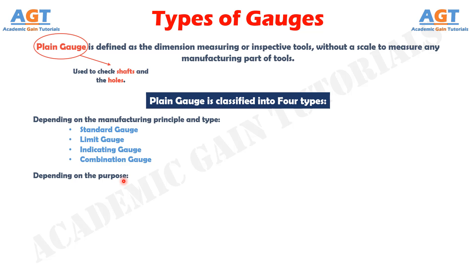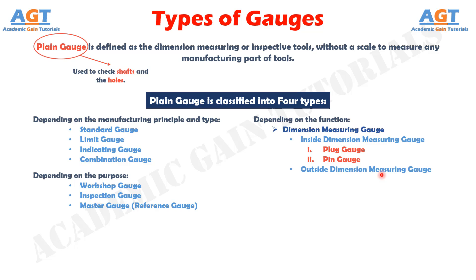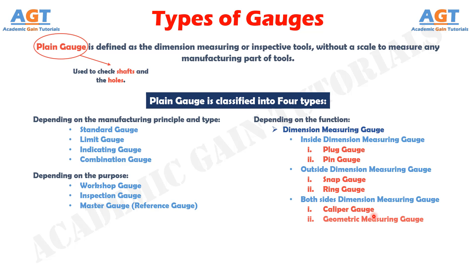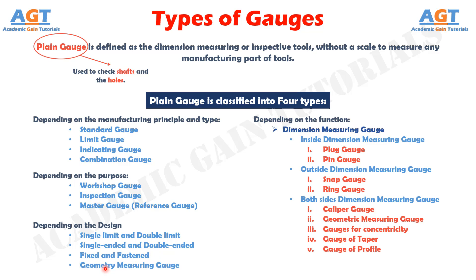Depending on the purpose of use, the plain gauges can be classified as workshop gauge, inspection gauge, and master gauge or reference gauge. Depending on the function, there are some dimension measuring plain gauges which include the inside dimension measuring gauge including plug gauge and pin gauge, the outside dimension measuring gauge including snap gauge and ring gauge, and both sides dimension measuring gauge including caliper gauge, geometric measuring gauge, gauges for concentricity, gauge of taper, and gauge of profile. Depending on the design, the plain gauges can be classified as single limit and double limit, single ended and double ended, fixed and fastened, and geometry measuring gauge.